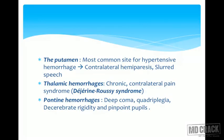The bleed may also be in the thalamic area. As the thalamus is related to pain and sensation, patients with thalamic hemorrhage may later present with contralateral pain syndrome after a few weeks. This is classically called Dejerine-Roussy syndrome — another important MCQ point.